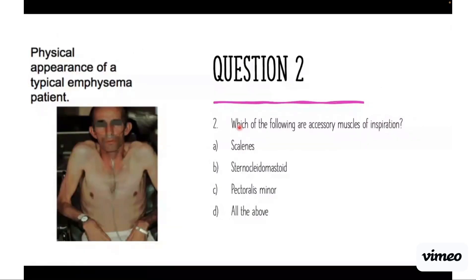Question two: Which of the following are accessory muscles of inspiration? The scalenes, sternocleidomastoid, pectoralis minor, or all of the above? The answer is all the above. You remember the scalenes pull on ribs one and two, the sternocleidomastoid can pull on the clavicle and the sternum, and the pectoralis can pull on ribs three through five.